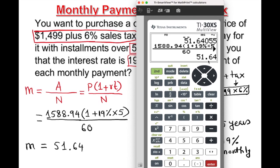Remember we always round up for money, even though this one doesn't need it. So $51.64 is the monthly payment.